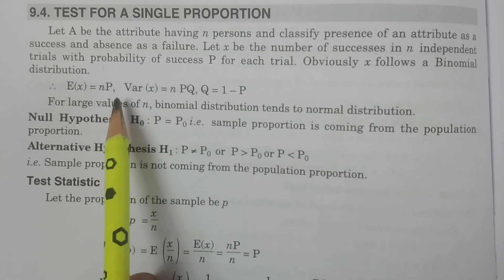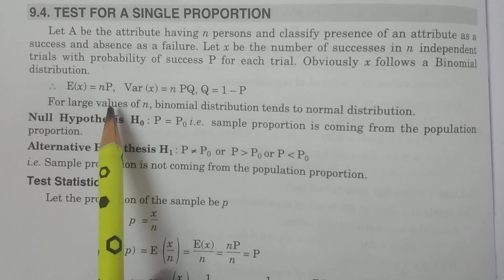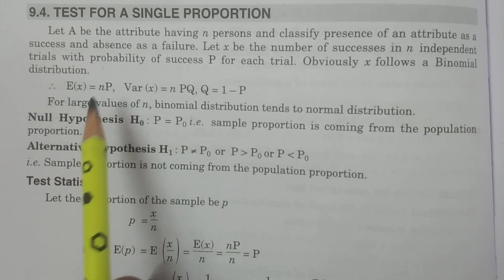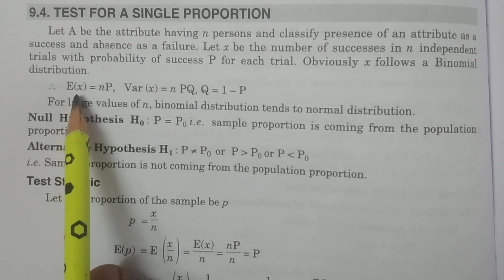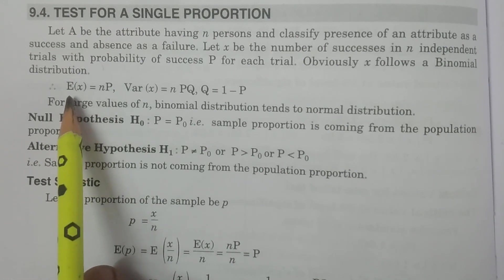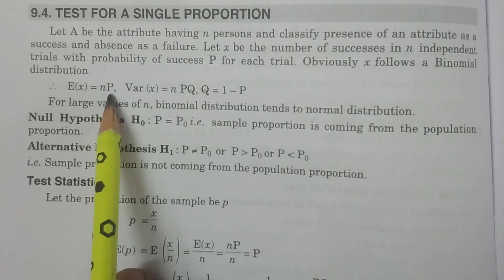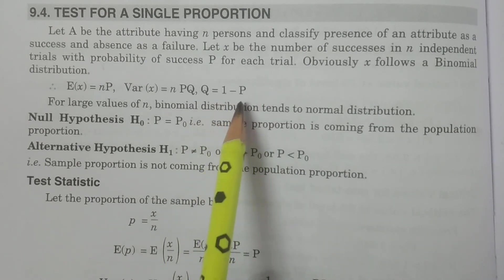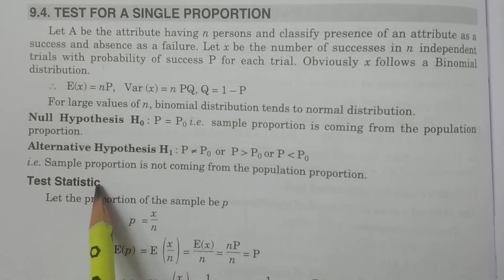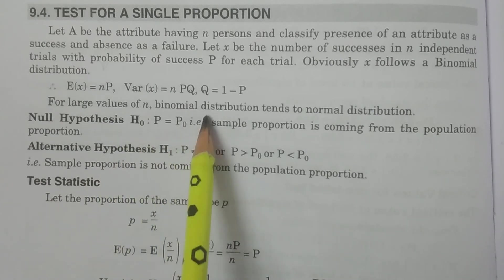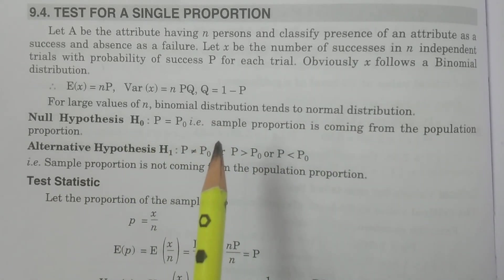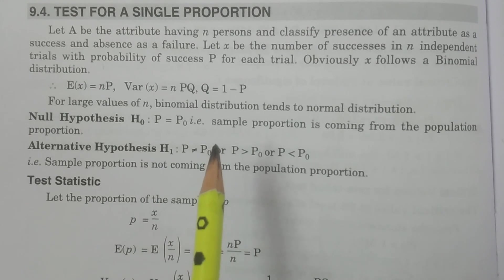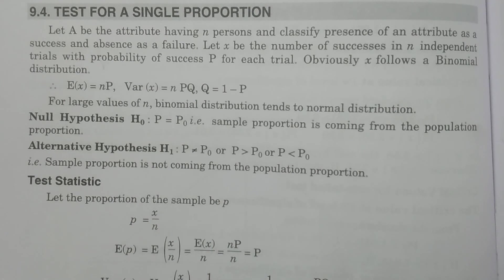Capital P is nothing but the population proportion. Therefore, with the binomial distribution, the mean — expectation of x — is equal to n times P, and the variance of x is equal to nPQ, where Q is equal to 1 minus P. For large values of n, the binomial distribution tends to a normal distribution. By using this concept, we can apply this particular test procedure to normal distribution.